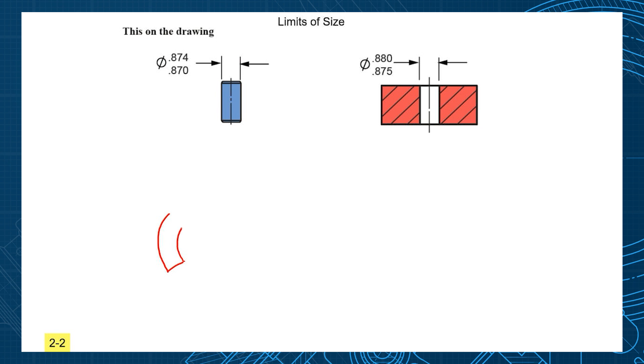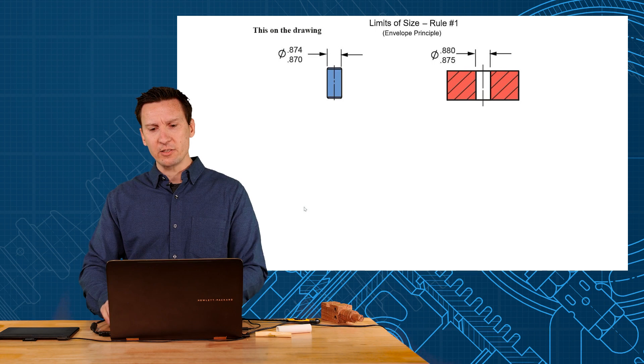Well, it depends on how you define the size of that feature. Some people say the size of the pin is determined by the point-to-point you measure across there. Other people say no, the size of the pin is determined by what hole it fits into. Those are two different answers. That's why it's important we define what the size tolerance means.